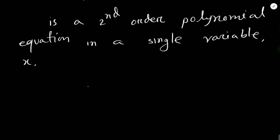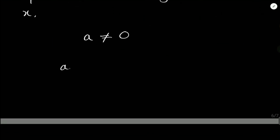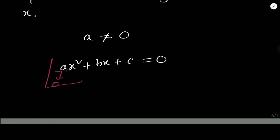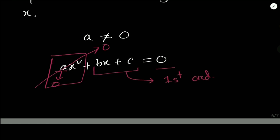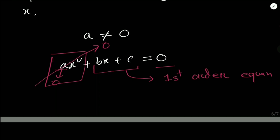There is one more important property: a cannot be zero. Why? Let's write the equation again: ax² + bx + c = 0. If a becomes zero, the first term disappears and the remaining equation becomes bx + c = 0, which is a first-order equation — not a quadratic equation. So a cannot be zero. Remember this important property.